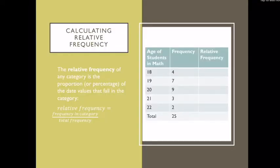So here I have to calculate the relative frequency. I already have a frequency table. I have the age of students in my math class. So there were four 18-year-olds, seven 19-year-olds, nine 20-year-olds, three 21-year-olds, and two 22-year-olds, for a total of 25 students in my class.